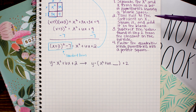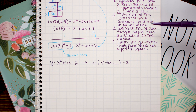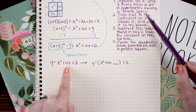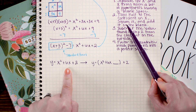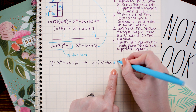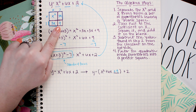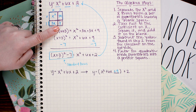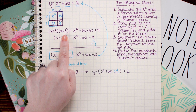Step two: take half of the coefficient on x, square it, and add it to the blank. The coefficient on x is 6; half of 6 is 3; 3 squared is 9. I place 9 inside the parentheses. That 9 should look familiar — it's the area we found for the small corner square in the area diagram. This number completes the expansion when you multiply x plus 3 times x plus 3.